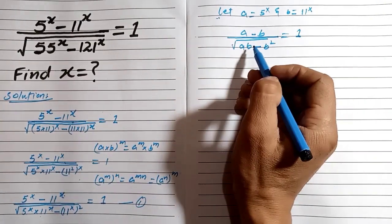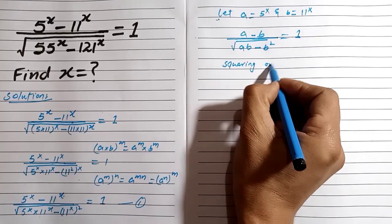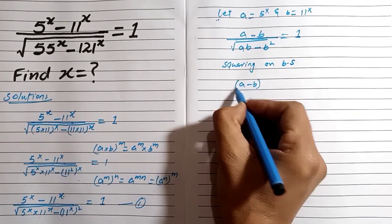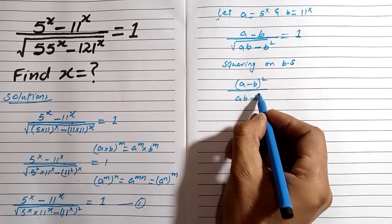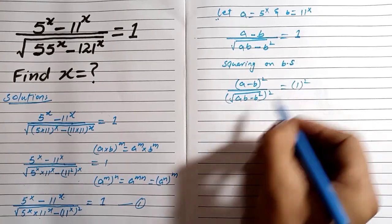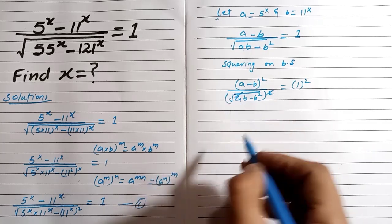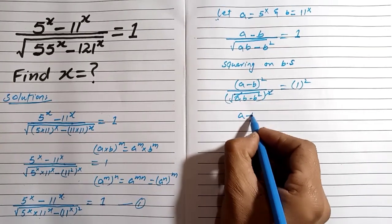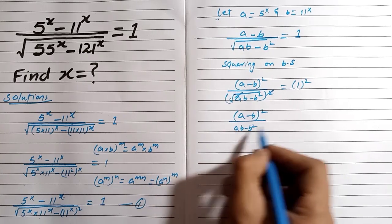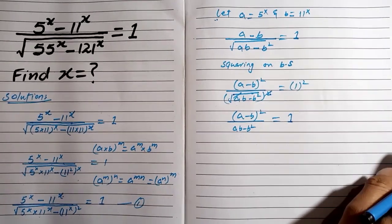For easiest simplification we use a and b. We square both sides: (a minus b) whole square divided by (a·b minus b squared) to the one square equals one squared. This cancels the square root. So in this equation (a minus b) whole square divided by (a·b minus b squared) equals 1.